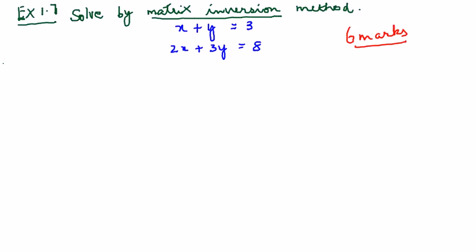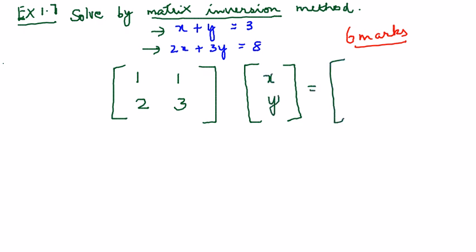So first step, what we have to do is write these two equations in the form of a matrix. Just take the coefficients of x and y. If I take the first equation it is 1, 1. If I take the second equation it is 2 and 3. So these coefficients when multiplied with x and y will give me 3 and 8.